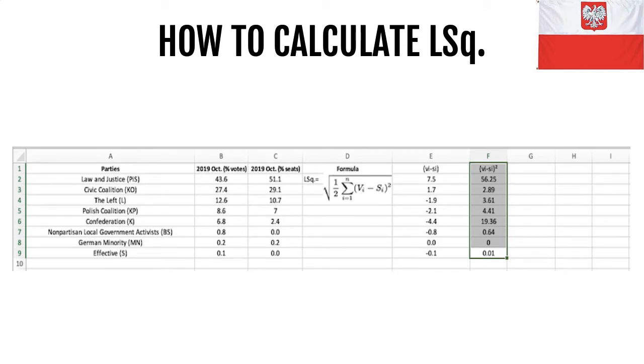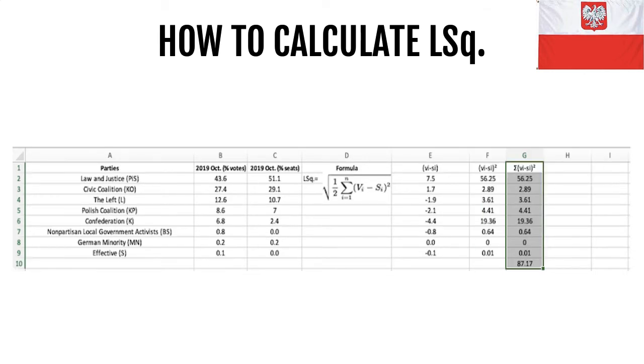So 7.5 squared is 56.25, 1.7 squared is 2.89, and this with every single party or coalition. The third step is to find the sum of all those differences squared, and we get 87.17 at the bottom.